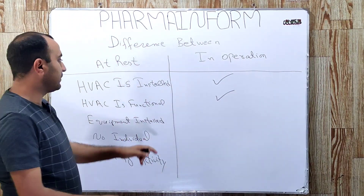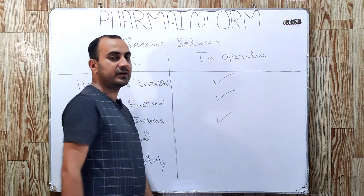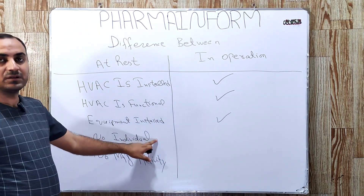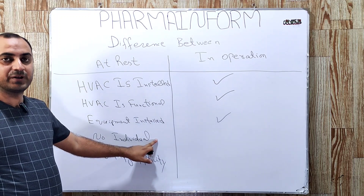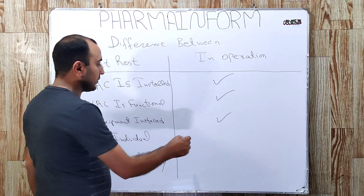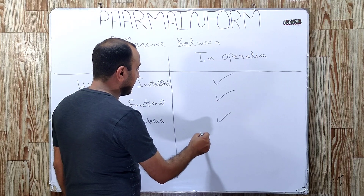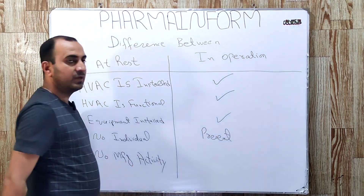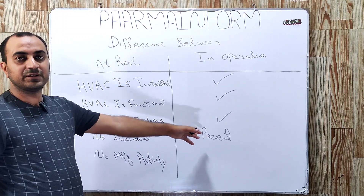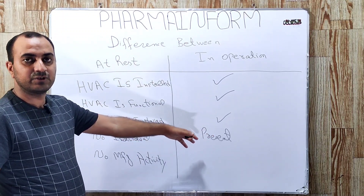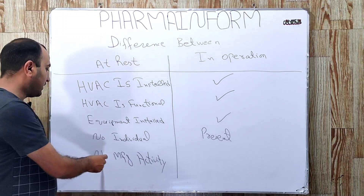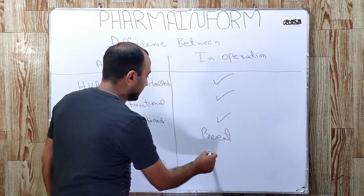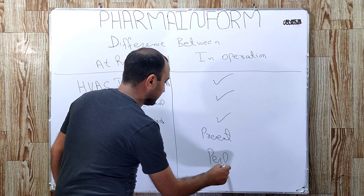Here is the difference: at rest, no individual is present, but in operation, operators or individuals are present in the clean room. Since individuals are present, manufacturing activity is also performed — unlike at rest where no manufacturing activity is performed.